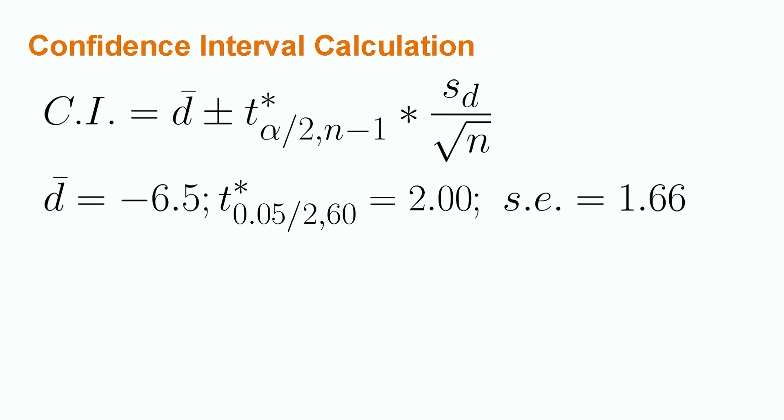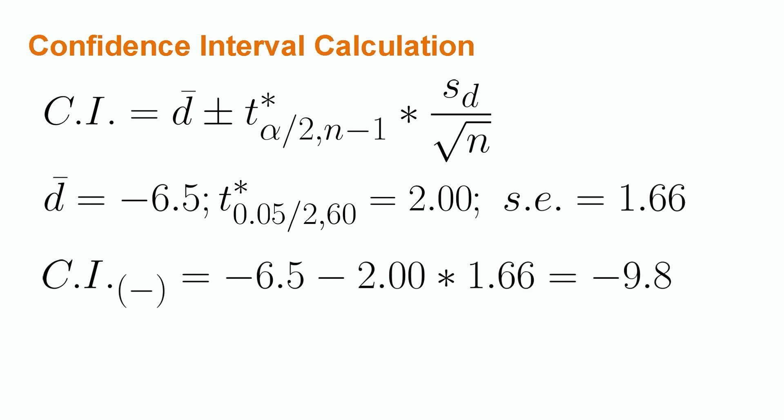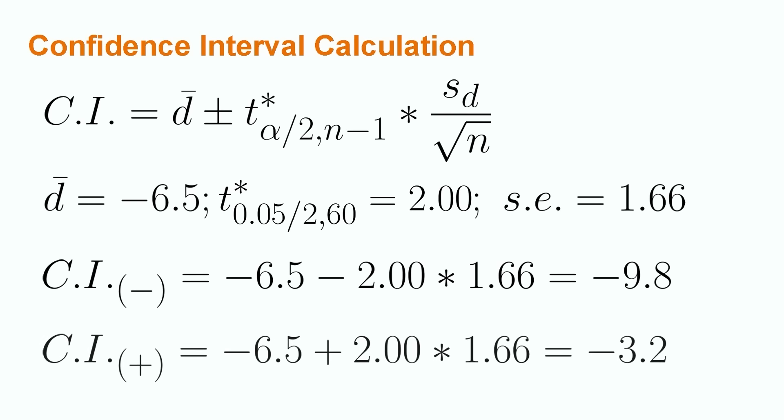Welcome back! Hopefully you were able to properly apply these equations. Let's take a look at the actual results, starting with the lower bound of the confidence interval. We have that the lower bound is equal to negative 6.5 minus 2.00 times 1.66, which is equal to negative 9.8. Similarly, the upper bound is equal to negative 6.5 plus 2.00 times 1.66, which is equal to negative 3.2.